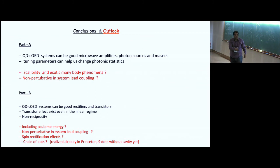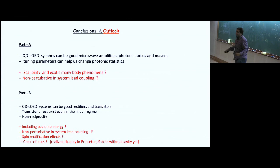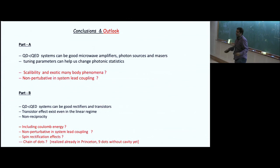Conclusions: these systems are good microwave amplifiers, photon sources, and masers. Tuning parameters changes photonic statistics. Scalability and exotic many-body phenomena are open problems. Non-perturbative treatment in system-lead coupling remains unclear. For part B, we showed they are good rectifiers and transistors. Outlook includes adding Coulomb energy, spin rectification, and studying chains of quantum dots — already realized in Princeton with nine dots but without a cavity yet.